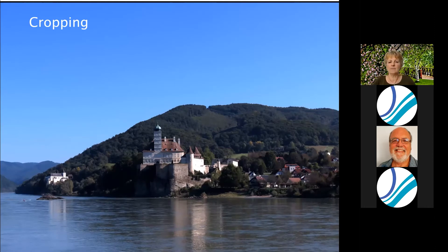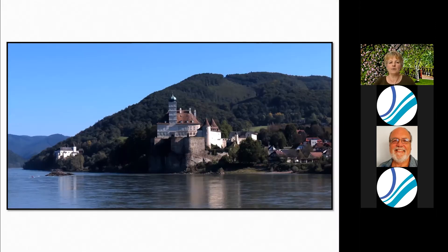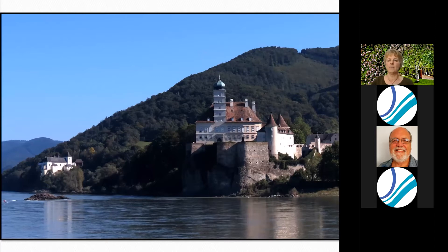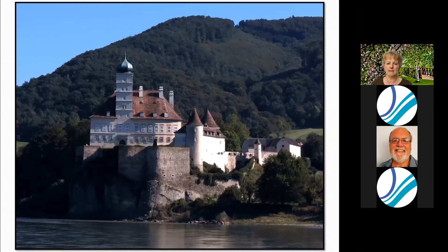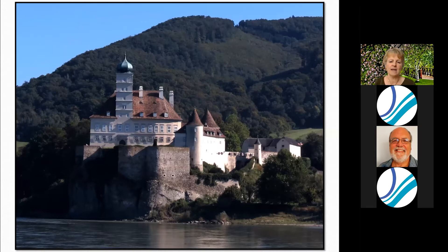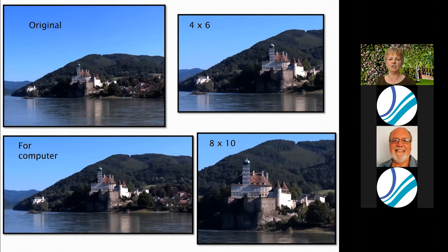When I took this picture on the Danube, I purposely gave myself lots of sky and water — I wouldn't have done that shooting film. I wanted to leave myself options. My first crop might be for a computer background, long and narrow. Second crop is four by six, your standard print size at Walmart or Costco. The next is eight by ten, a typical enlargement. Most cameras would have enough resolution for those crops.